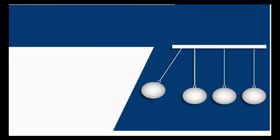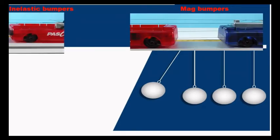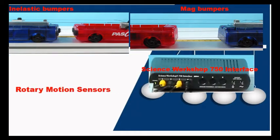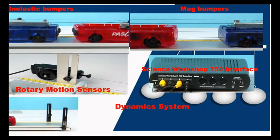The equipment for this experiment includes magnetic bumpers and elastic bumpers, Science Workshop 750 interface, rotary motion sensor, and dynamic system setup.